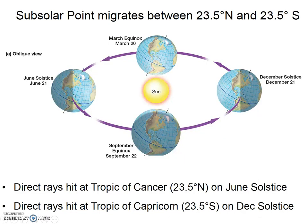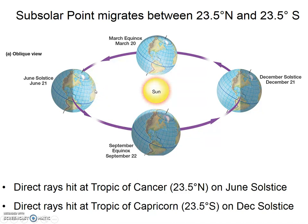We can see the same thing on this diagram: the direct rays of the Sun hitting at the Tropic of Cancer on June 21st. As the Earth revolves around, it hits at the equator on the equinox, then the direct rays hit in the Southern Hemisphere at the Tropic of Capricorn on the December solstice, then back at the equator on the March equinox, and back in the Northern Hemisphere at the Tropic of Cancer on June 21st. Those special days when the Sun's direct rays hit as far north or as far south as they'll ever go are called the solstices — the June and December solstice.